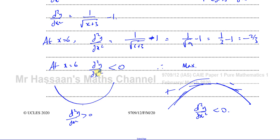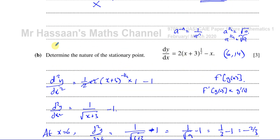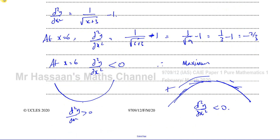If the second differential gives a negative value at a stationary point, there's a maximum. If it gives a positive value, there's a minimum. Therefore there is a maximum at this stationary point. That's part B done.